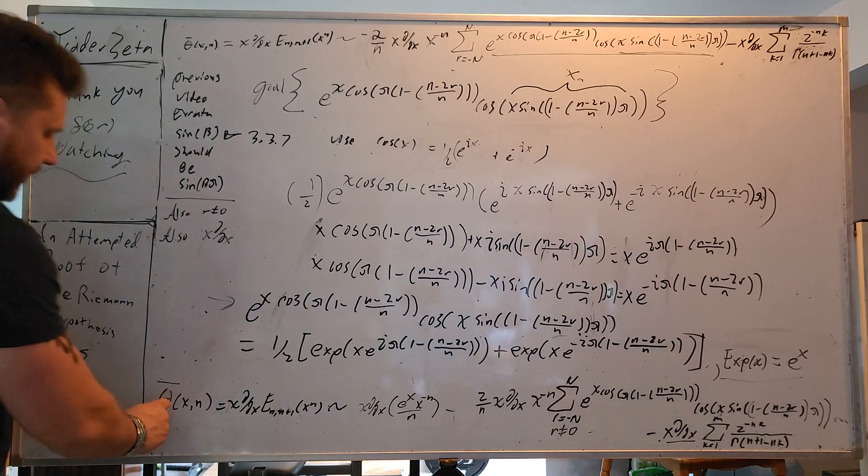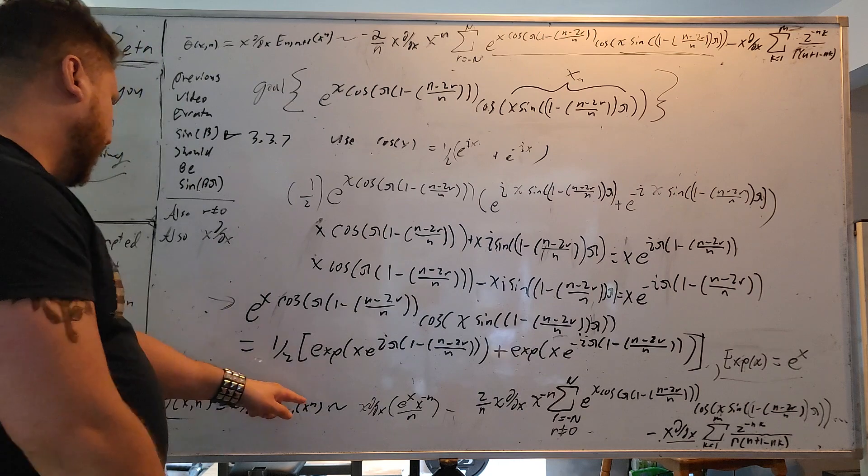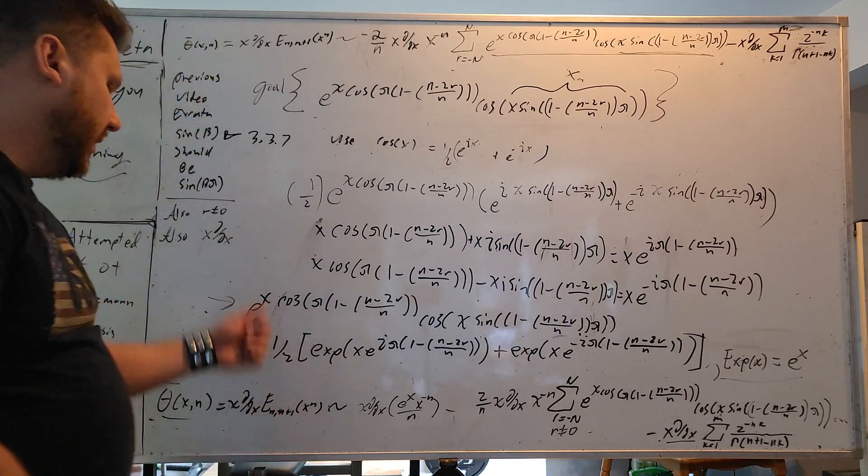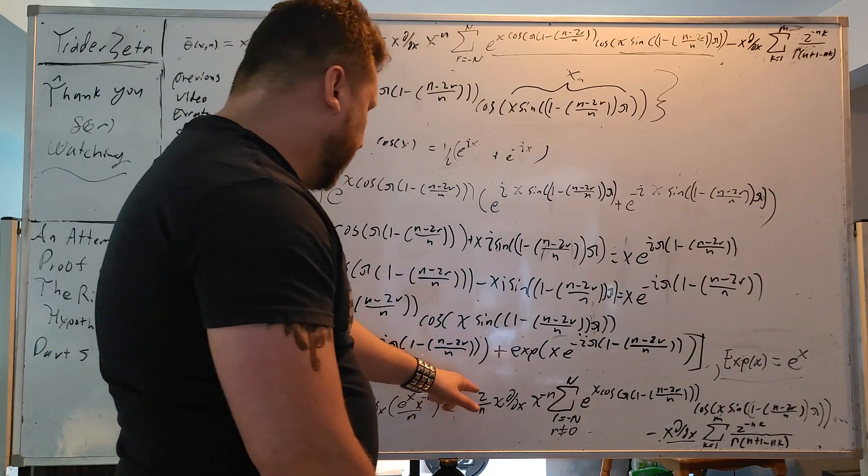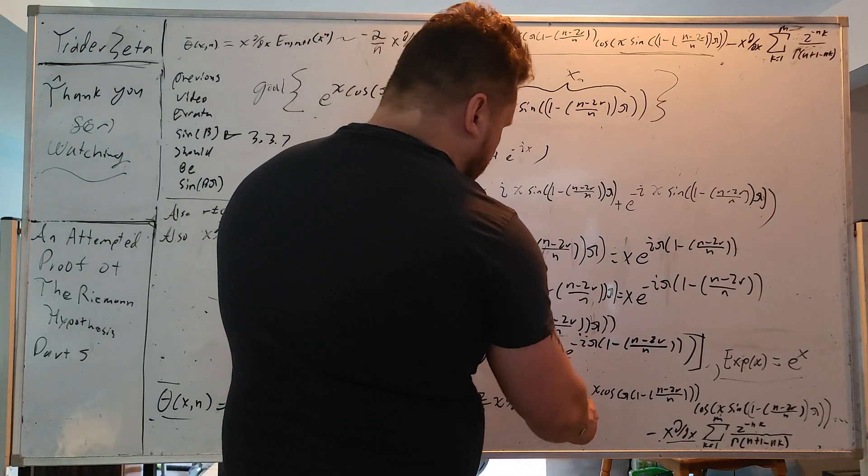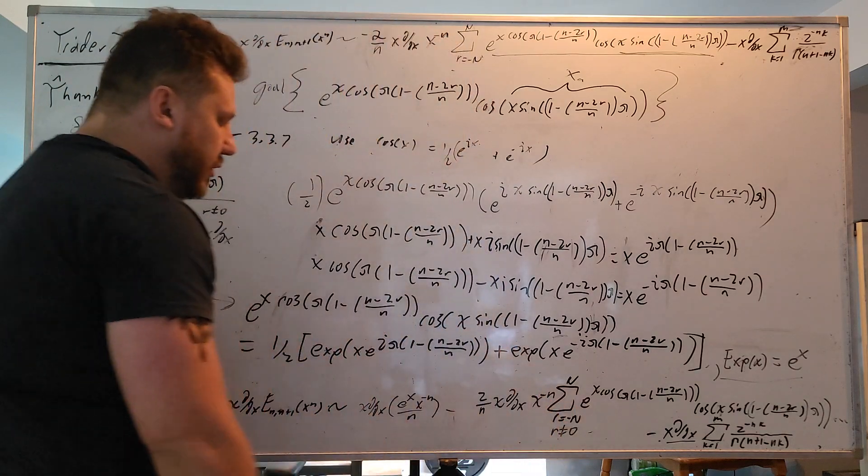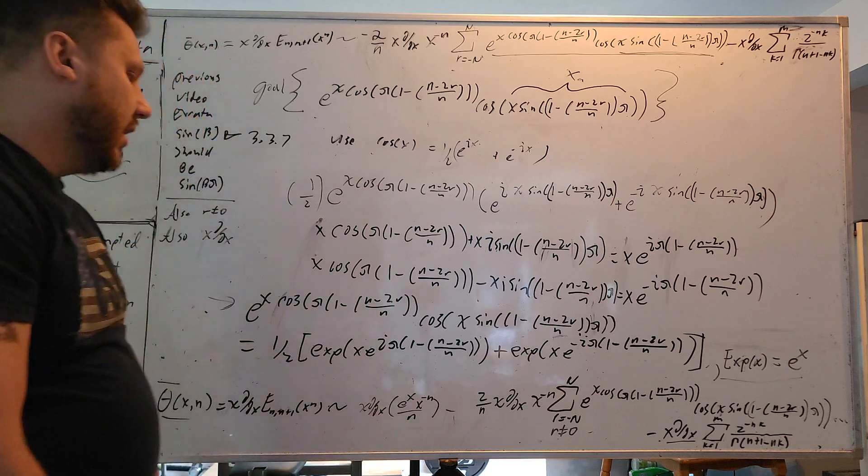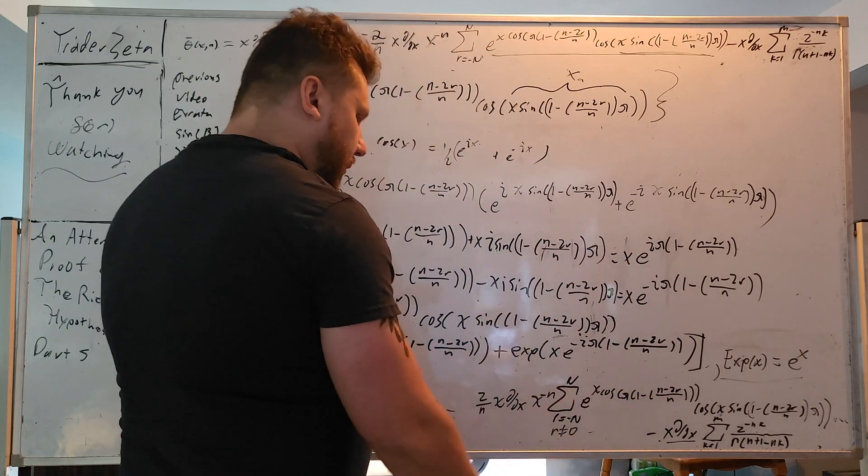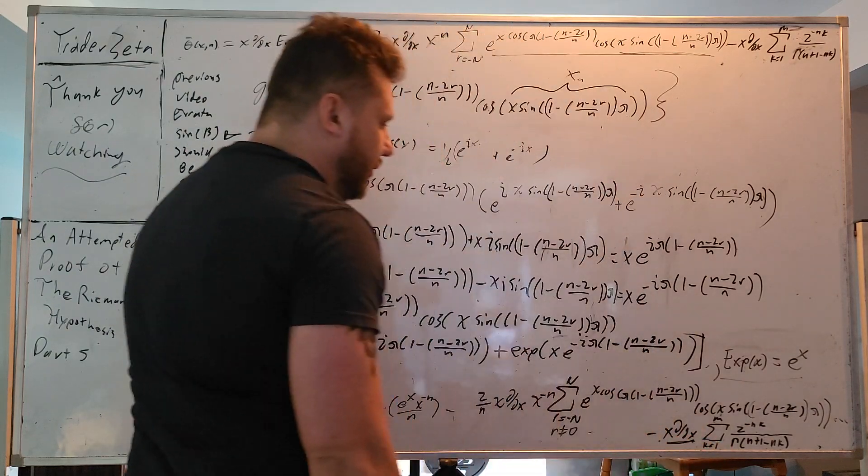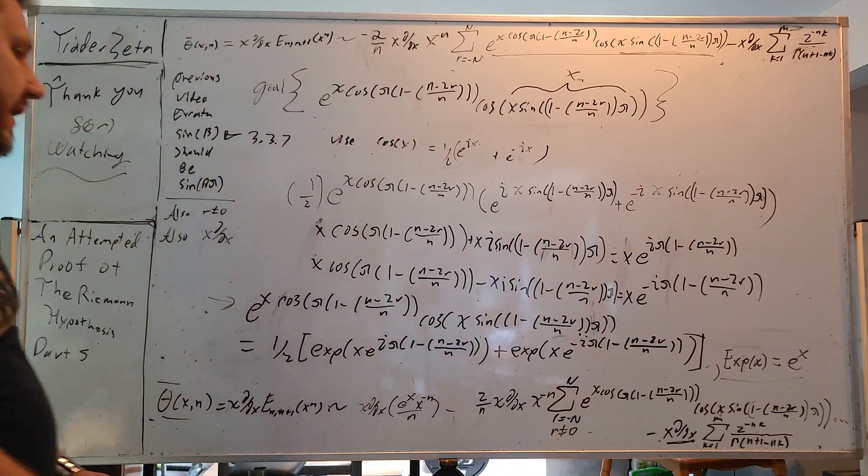Previously we derived theta bar of Xn and we said there was the asymptotic expansion of this Mittag-Leffler function statement right here, and its asymptotic expansion is XDDX, you have this term right here, minus 2 divided by n and you have the XDDX, X to the minus n. And I forgot to mention in the last video that there is an R not equals to 0 here because that is essentially this term right here. I also forgot an XDDX on the last video on this last sum series, because they're all shifted, they all have shift operators.